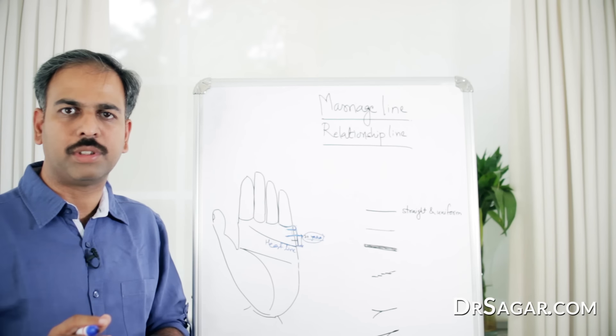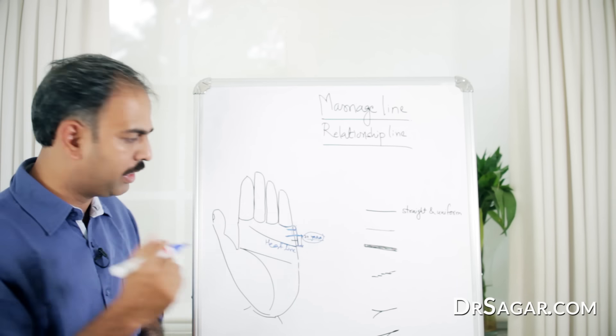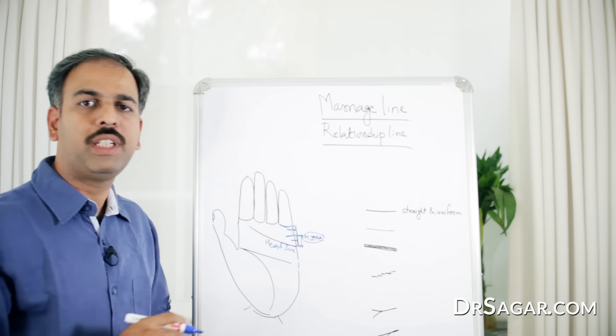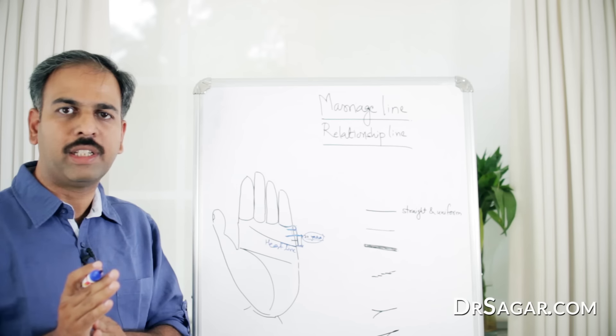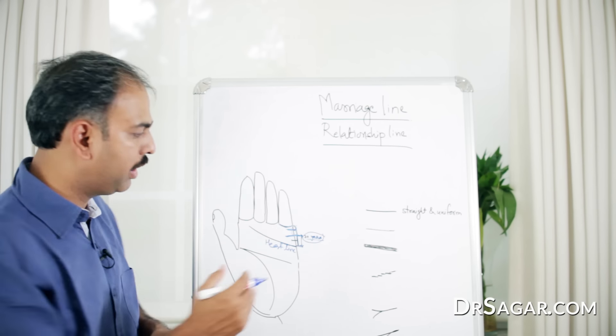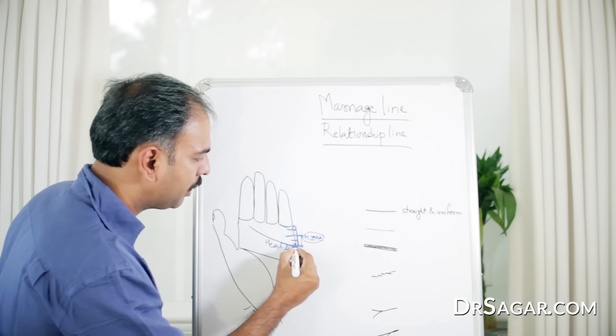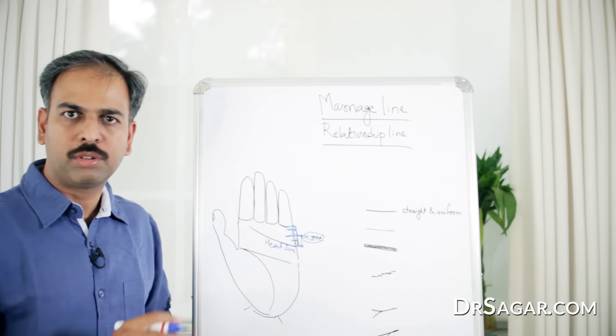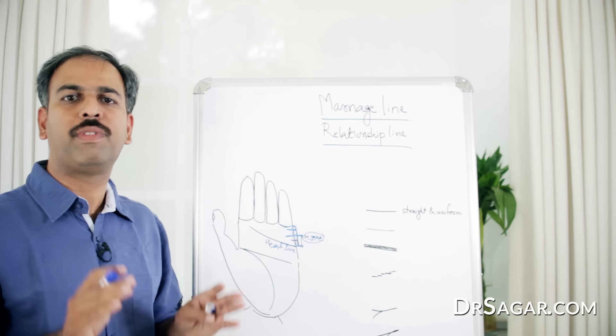It is a compromising situation in the starting of a relationship. So, this is how we know the marriage line or relationship line and its significance according to its situation on the part where relationship lines are present. This is the position-wise interpretation of the relationship line.